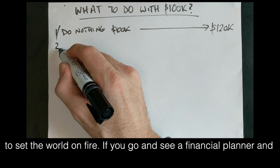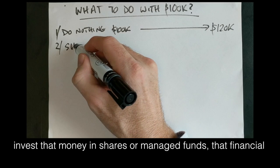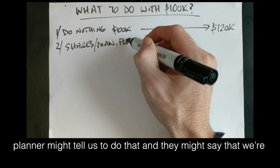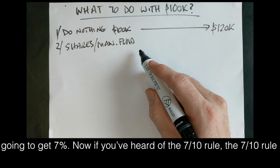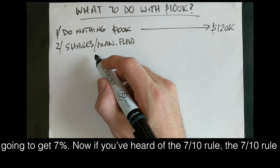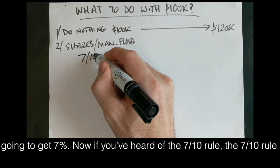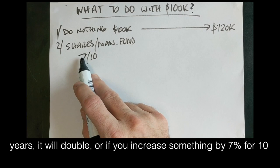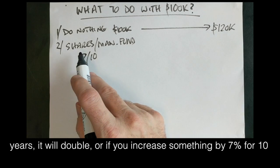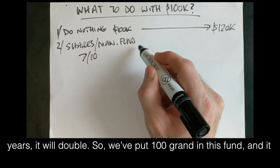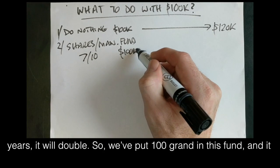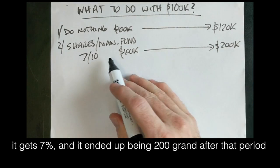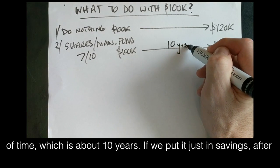Now if you go see a financial planner and invest that money in shares or managed funds, that financial planner might tell us to do that and they might say that we're going to get 7%. If you've heard of the 7-10 rule, the 7-10 rule says that in seven years, if you increase something by 10% for seven years, it'll double or if you increase something by 7% for 10 years, it'll double. So we put our $100,000 in this fund and it gets 7%, and it ends up being $200,000 after that period of time, which is about 10 years.